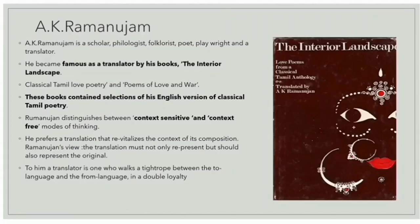A.K. Ramanujam is a scholar, philologist, folklorist, poet, playwright and a translator. He became famous as a translator through his books, including The Interior Landscape, about classical Tamil love poetry, and Poems of Love and War. These books contained selections of his English versions of classical Tamil love poetry. Ramanujam distinguishes between context-sensitive and context-free modes of thinking. According to him, the Euro-American culture is context-free while the Indian way of thinking is context-sensitive. He prefers a translation that revitalizes the context of the composition. His view is that a translator is one who walks a tightrope between the true language and the form — a double loyalty.